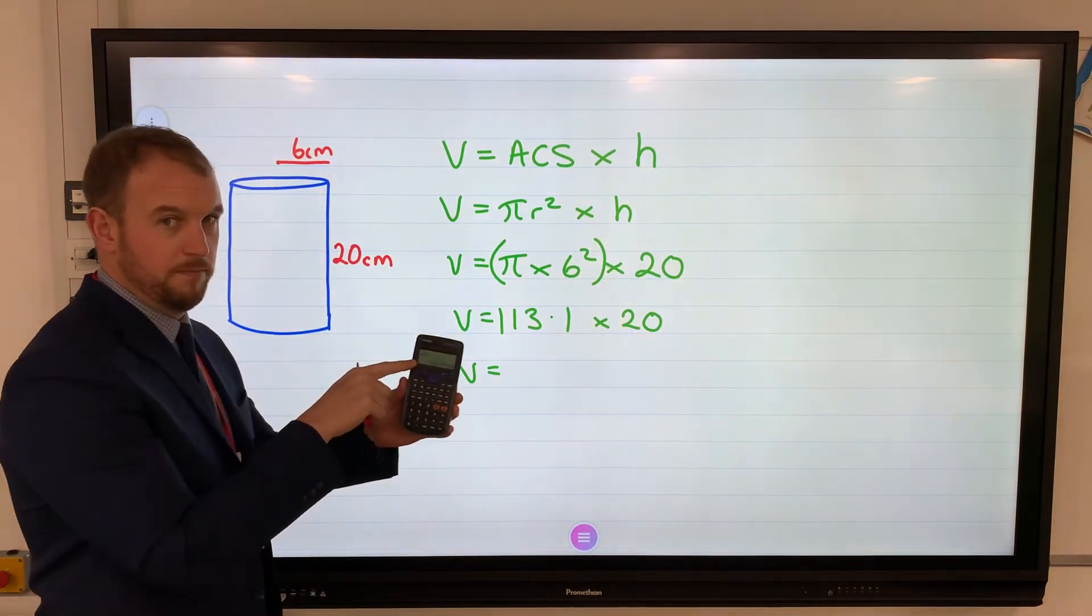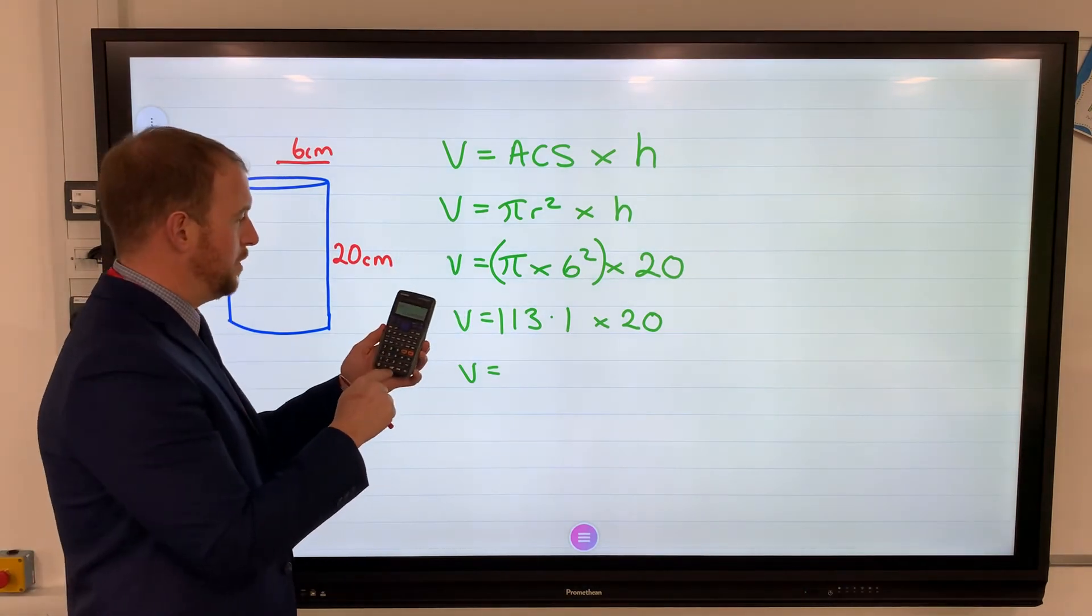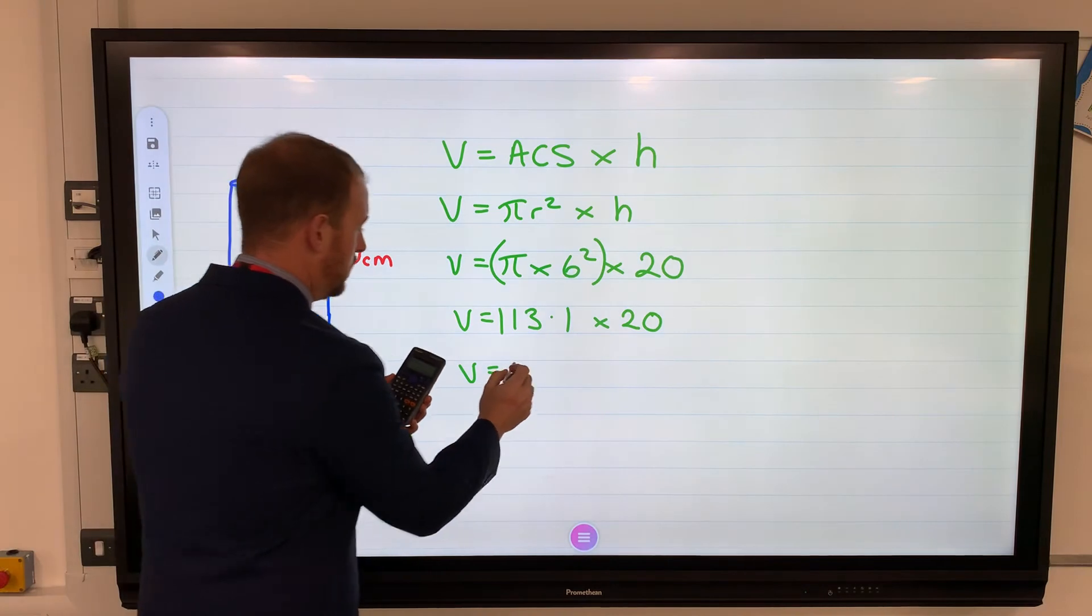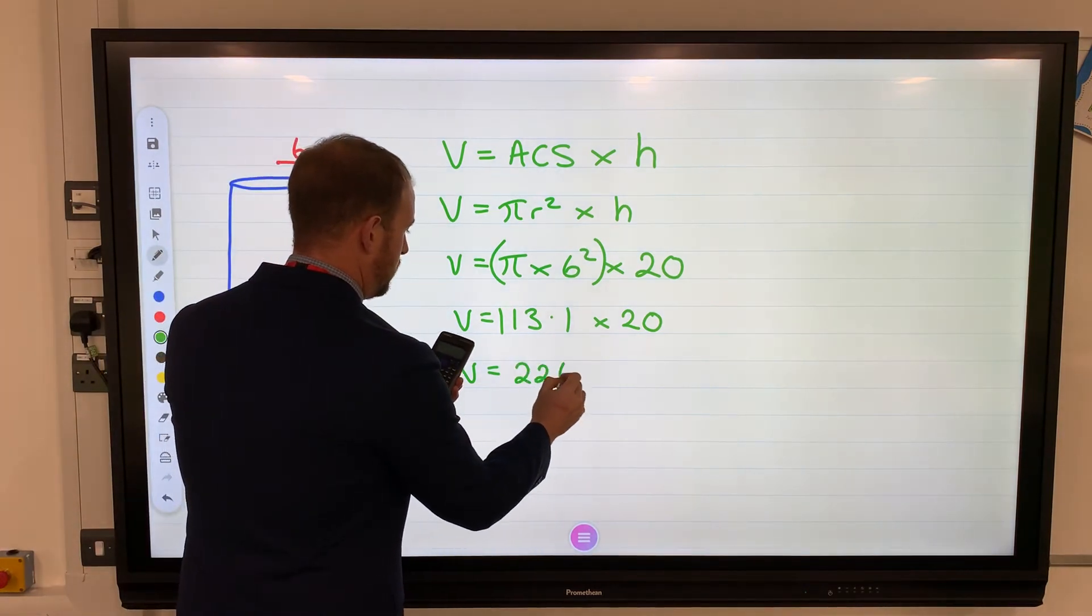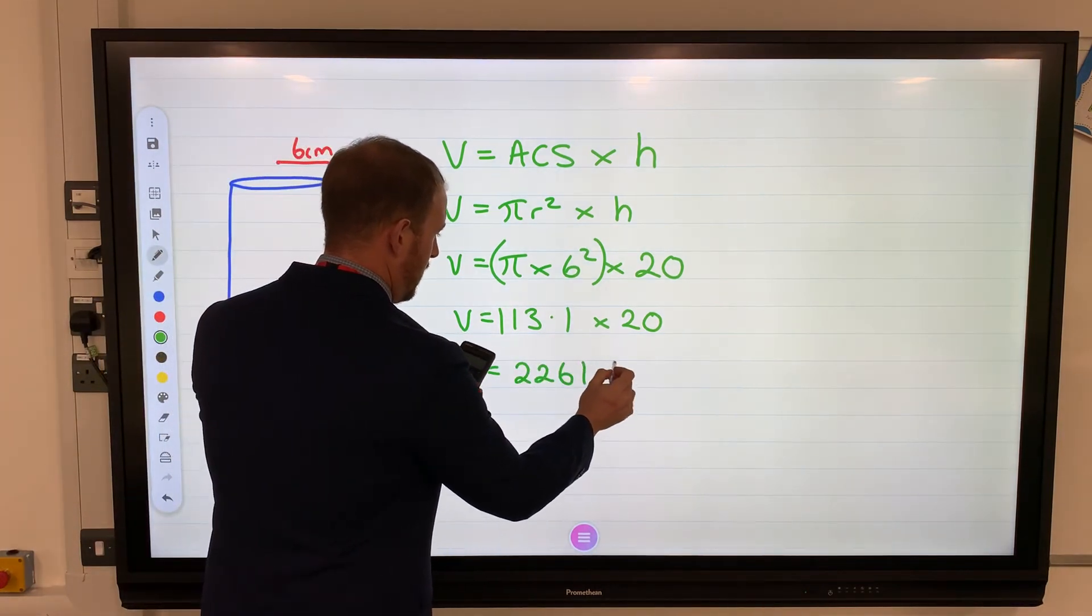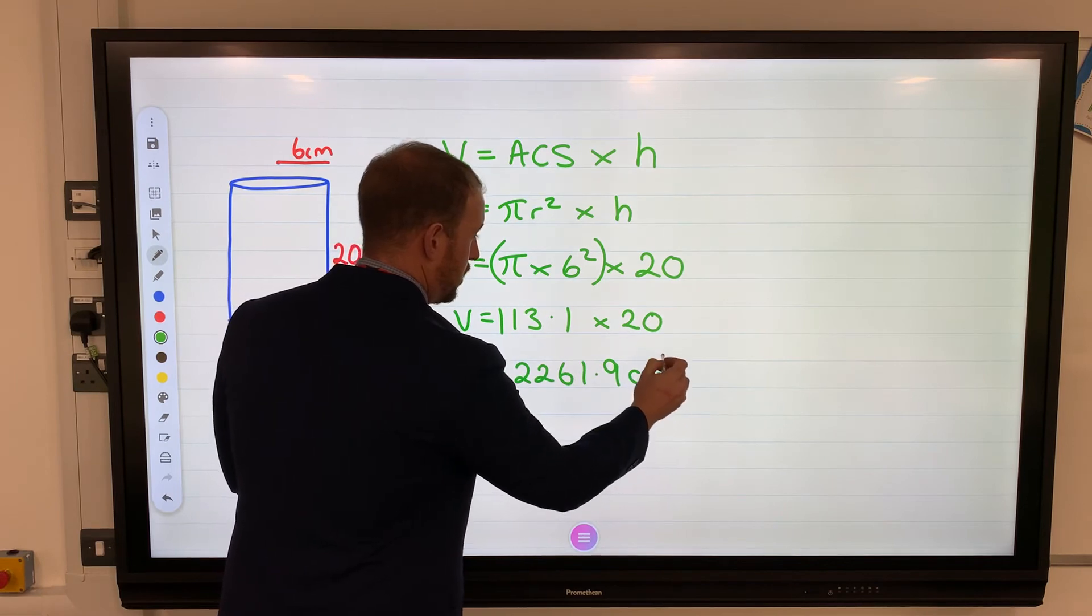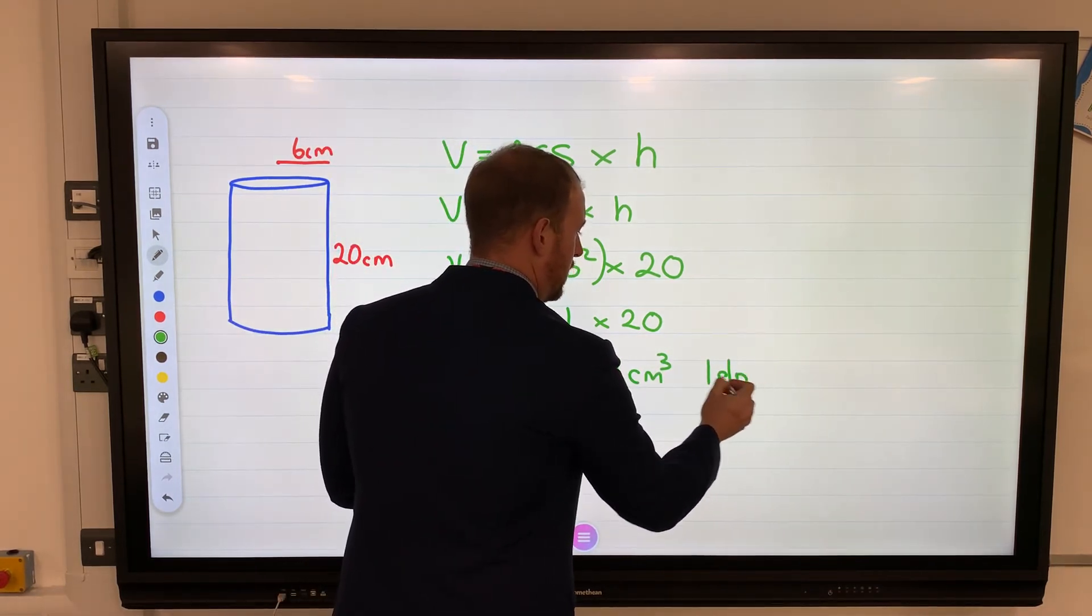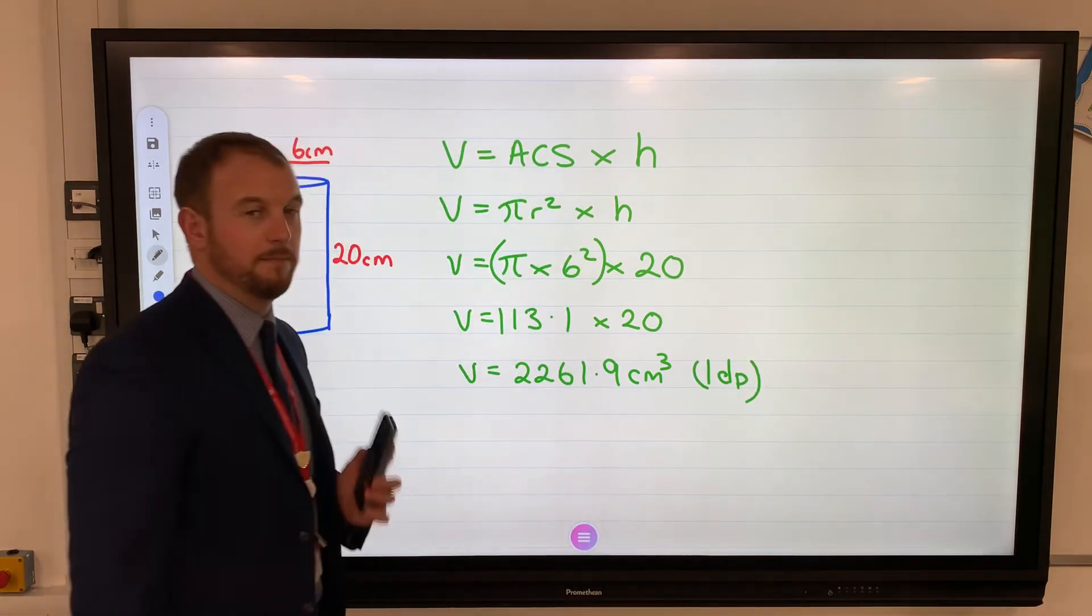And then obviously whatever that is we're going to times by 20. I'm keeping this on the screen, I haven't changed it. Keep on the screen, times it by 20, equals 2261.9 centimeters cubed volume. But I've also rounded that to one decimal place. Be careful what the examiner is asking for.